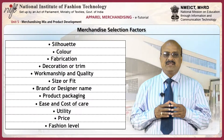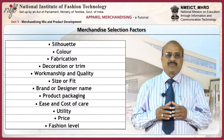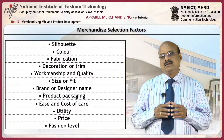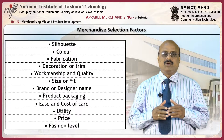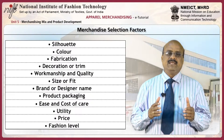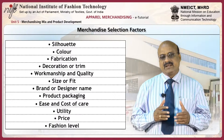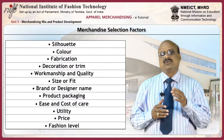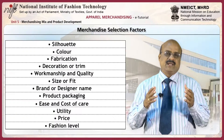Listed here are factors for selecting merchandise. They are silhouette, color, fabrication, decoration or trim, workmanship and quality, size or fit, brand or designer name, product packaging, ease and cost of care, utility, price and fashion level.